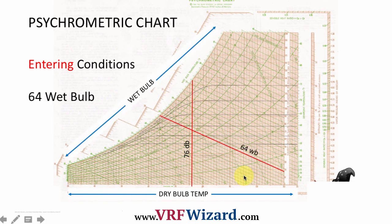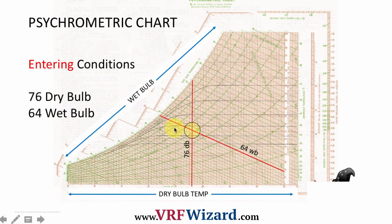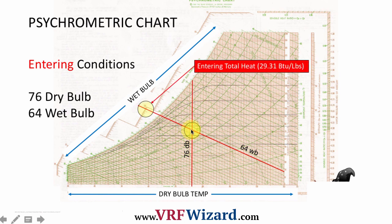We have 76 dry bulb and 64 wet bulb. The wet bulb numbers run along the curve — here's 65, one back is 64. There's the 64 wet bulb line and here's where they intersect. From that entering conditions point, we extend the wet bulb line up into the enthalpy chart area. That gives us 29.31 BTUs per pound of dry air entering the coil.